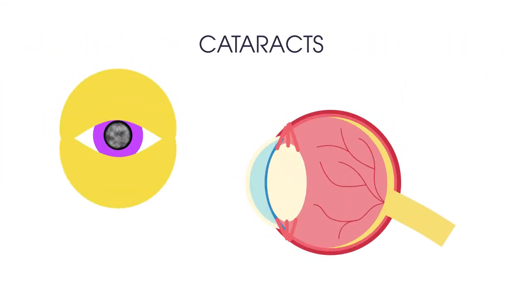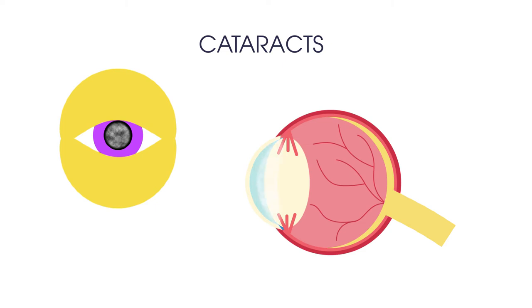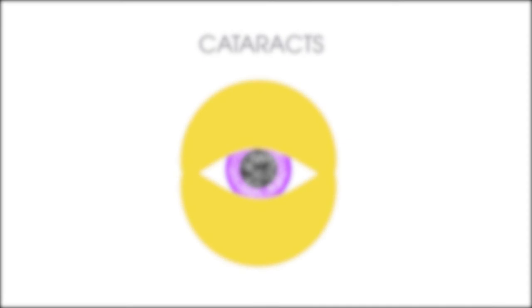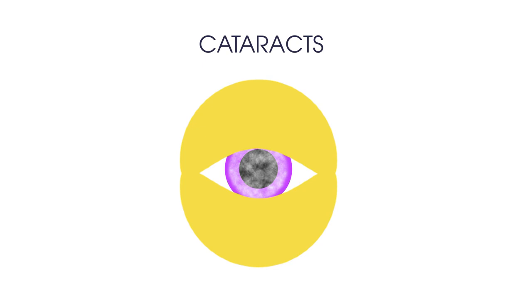The third condition is cataracts. This is when the lens, a small transparent disc inside your eye, develops cloudy patches. Cataracts are more common in older people. Over time, the cloudy patches usually become bigger, causing blurry, misty vision and eventually blindness. Cataracts can be treated by surgery, which can involve replacing the lens with a synthetic one.